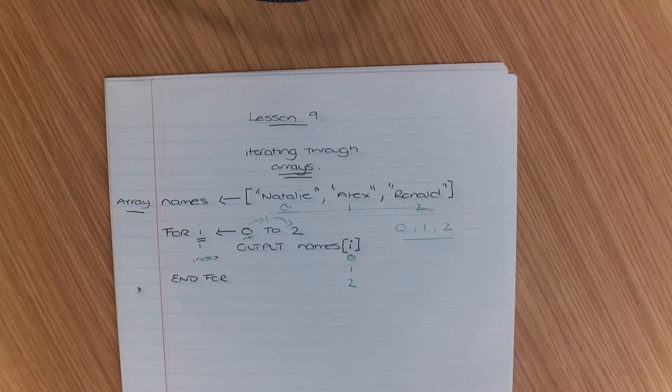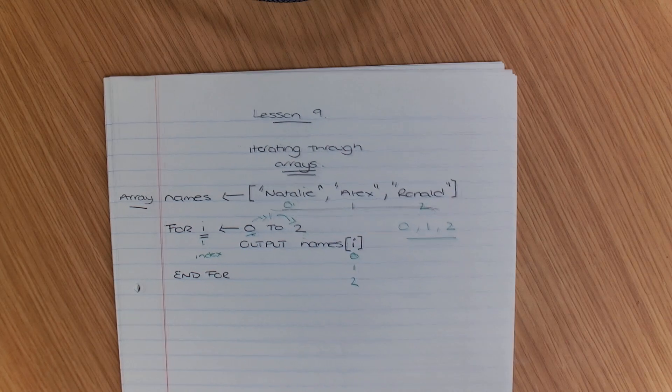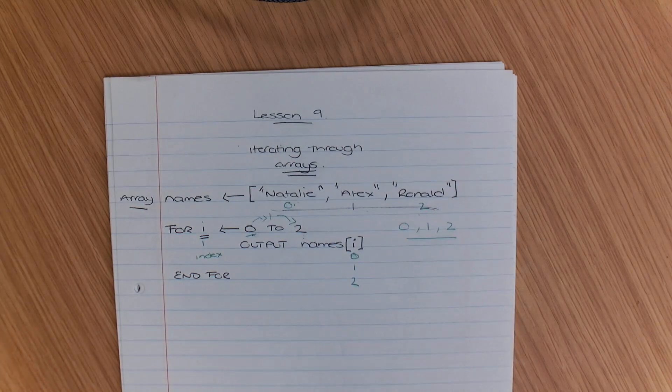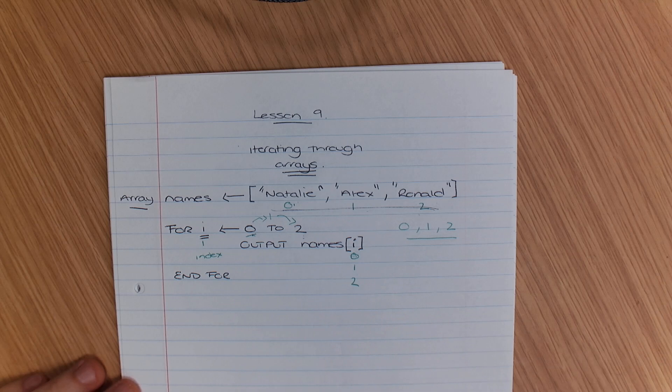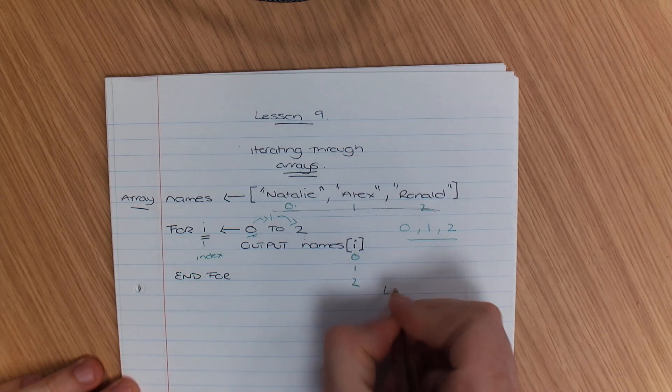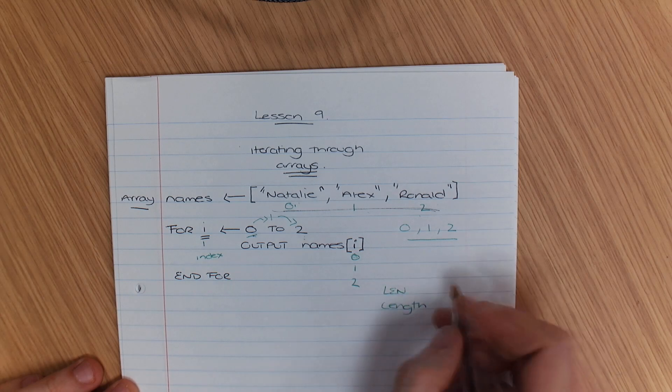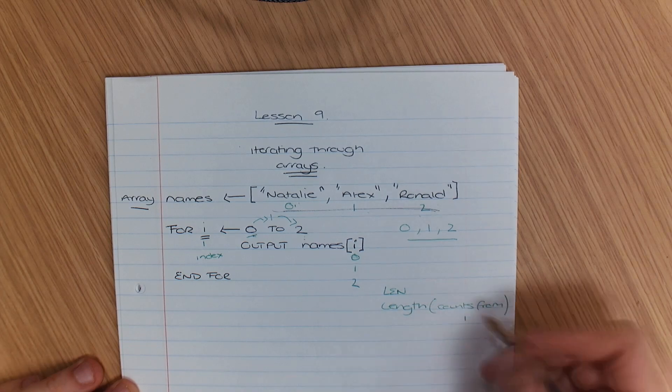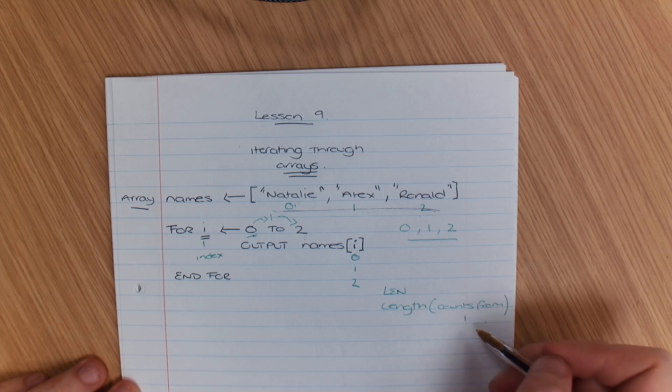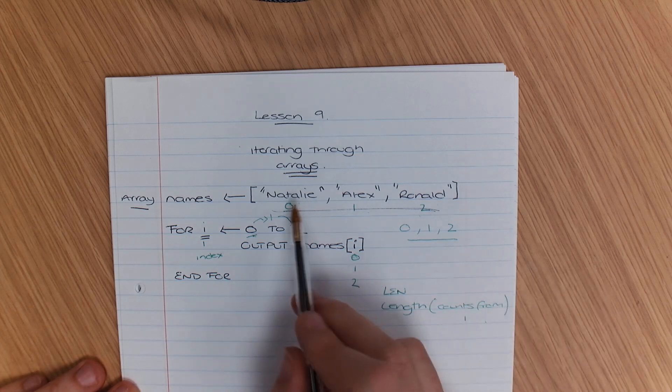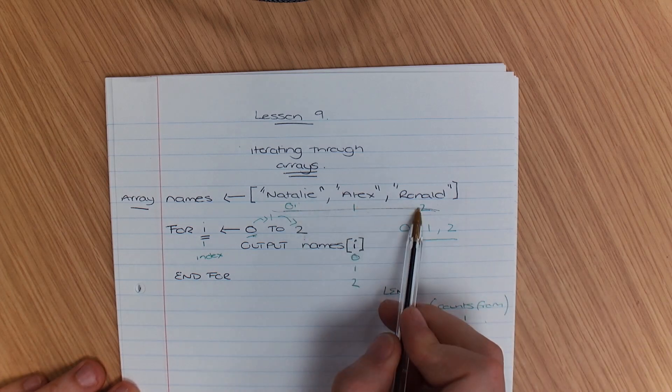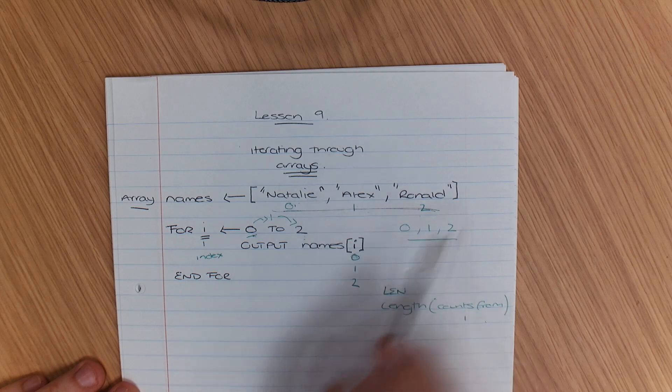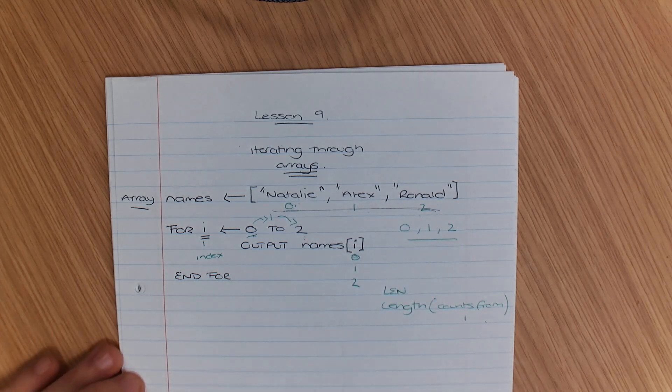There's another way you might want to do this. But you've got to remember that when you find the length of something, so when you find the length or the len, it starts counting from 1. So it counts from 1. Why is that a bad thing? Because if we counted from 1, 2 to 3, that value is going to put us out of range. And I'm going to explain why in a minute.